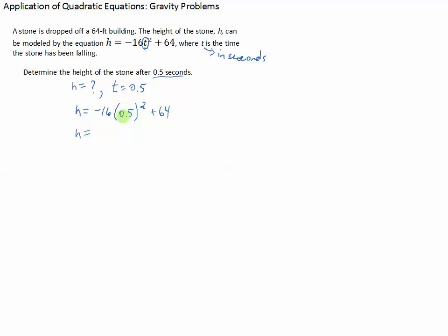So h equals negative 16 times 0.5 squared plus 64. Solving, you get 0.25. Make sure to square this before you multiply. Negative 16 times 0.25 is negative 4 plus 64. So h is 60. That means the height of the stone after 0.5 seconds is 60 feet.